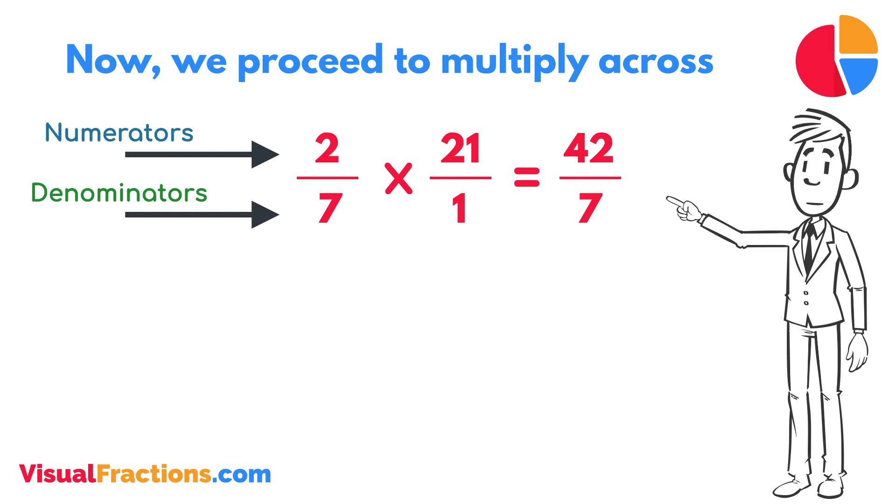To find the final answer, divide the numerator by the denominator. So, 42 divided by 7 equals 6.